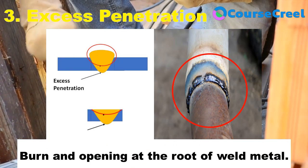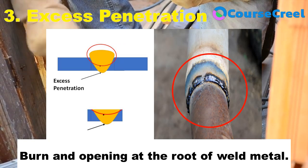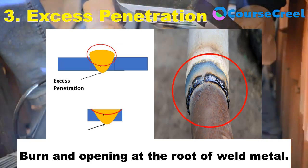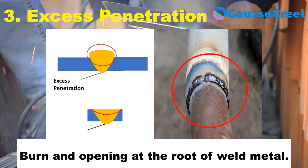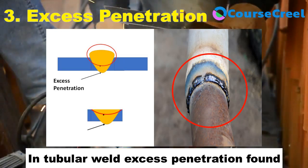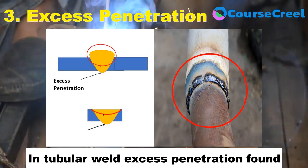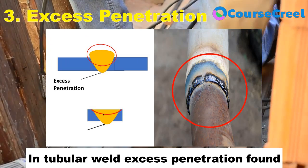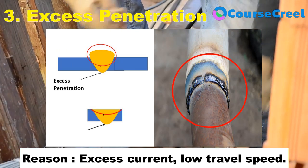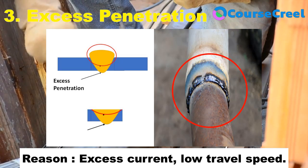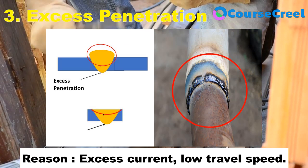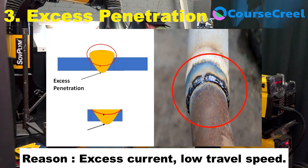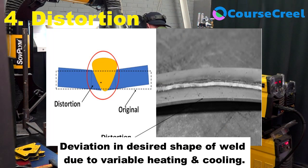The next type of geometric defect is excess penetration, defined as burn and opening at the root of the weld. When burn and opening are found at the root of the weld, it is known as excess penetration. It may cause serious defects especially in tubular welds and can form sharp notches. Excess penetration mainly occurs because of excess current and low travel speed, and it can negatively affect fatigue strength.